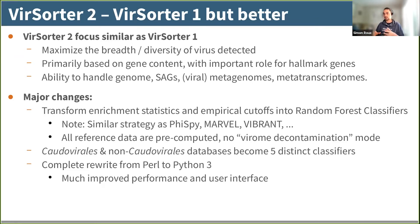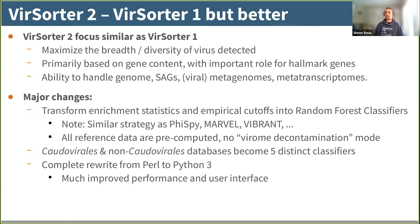The major changes: we transformed the enrichment statistics and empirical thresholds into a random forest classifier, similar to what tools like VIBRANT do. We removed the need to decide between decontamination mode or not, unifying everything. The idea of multiple databases from VSorder1 was expanded into five distinct classifiers. And for users, there was a complete rewrite from Perl to Python 3, which makes it much improved both in terms of performance and user experience.